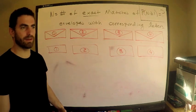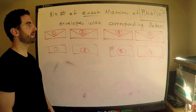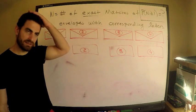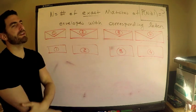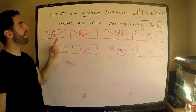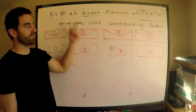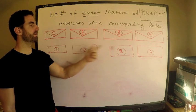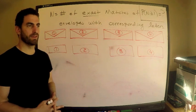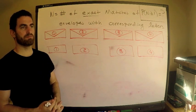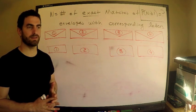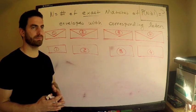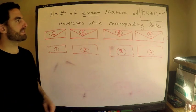I'm not doing this the way they did it in the original problem. I have a random variable — calling it N — and N is the number of exact matches. I emphasize exact matches because I want you to think of it that way: exact matches of envelopes with corresponding letters. If N equals one, that means only one letter goes to the correct envelope. So it's not inclusive — when N is one it can be one, two, three, or four; there are only four envelopes.